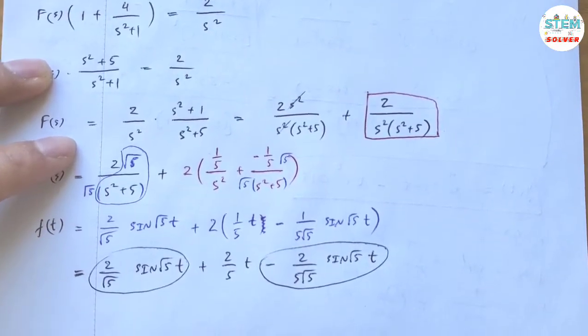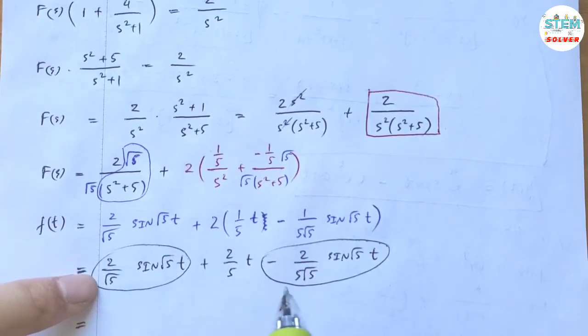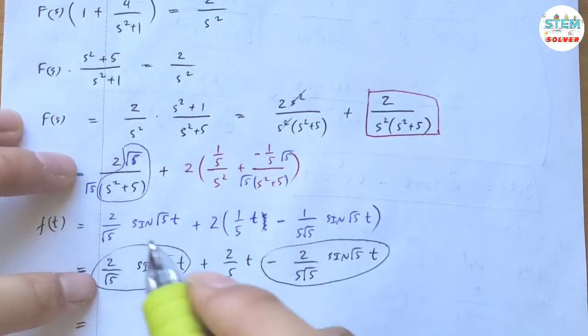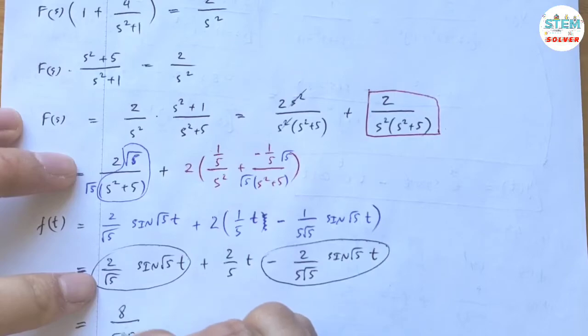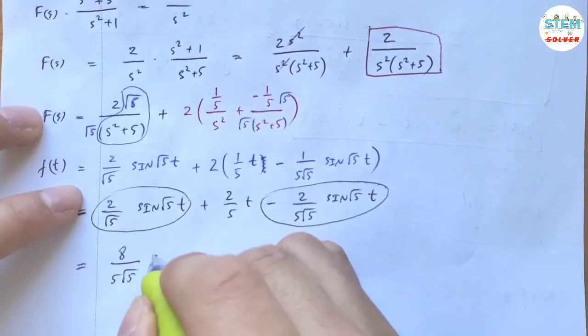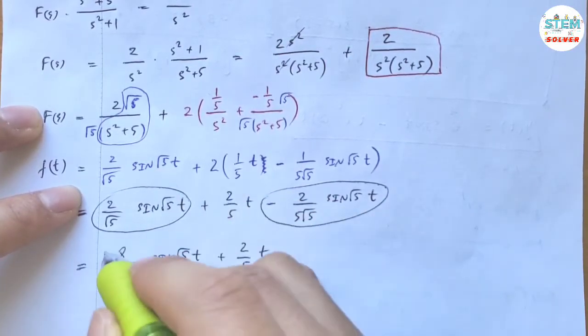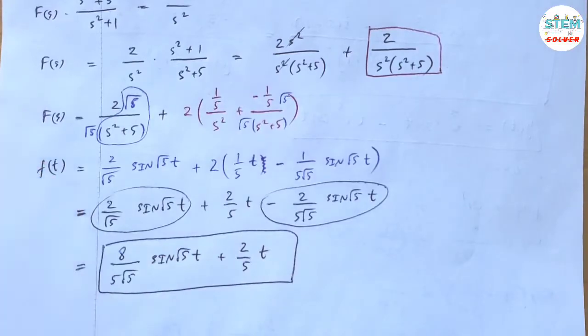So multiply this by 5 to get the same denominator. 5 times 2 is 10, 10 minus 2 is 8. So 8 over 5 square root of 5, sine of square root of 5t, plus 2 over 5t. So this is your final solution, that's it.